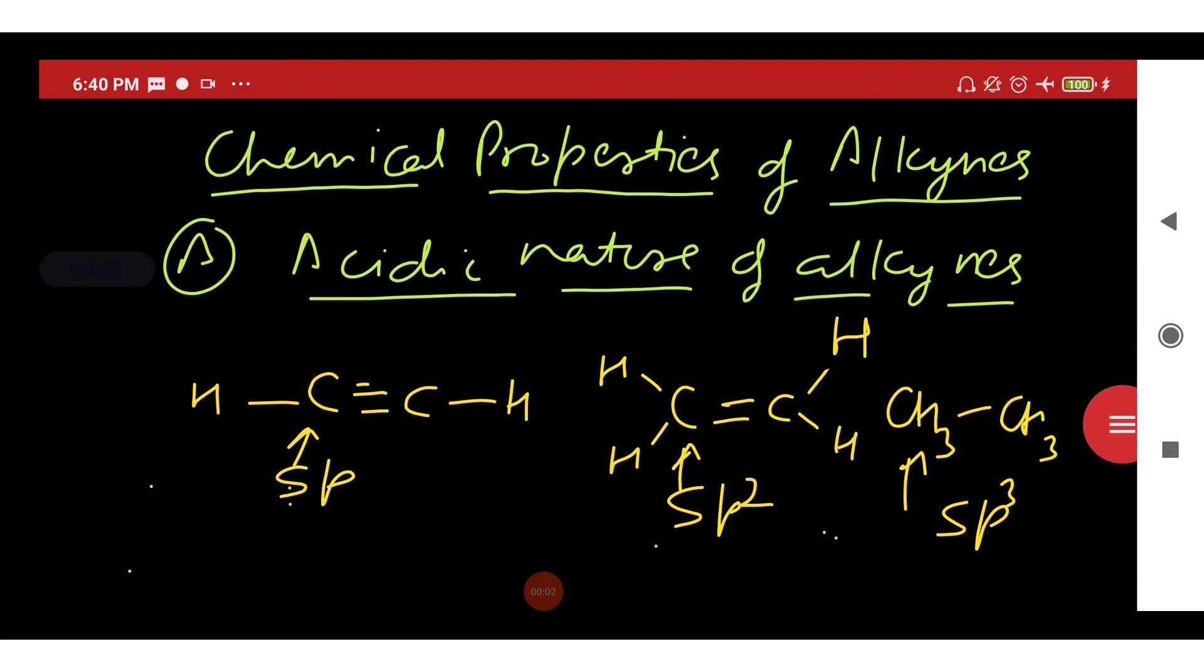Now we will study about the reason behind acidic nature of alkynes. We have studied that in ethyne, sp hybridized carbon atoms are there. In case of ethene, sp2 hybridized carbon atoms are present. And in case of ethane, sp3 hybridized carbon atoms are present.